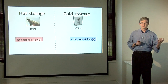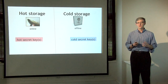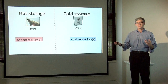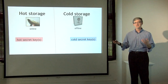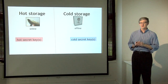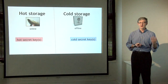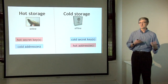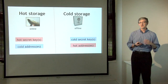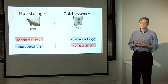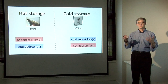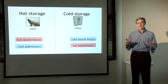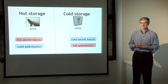You're going to have separate secret keys to control coins on the hot side and the cold side. The whole point of cold storage is that the coins in cold storage are not vulnerable to attack or loss if the hot storage is compromised. Each side needs to know the addresses the other side is using because you want to be able to transfer money back and forth. Each side knows its own secret keys and also knows the addresses at which the other side will accept transfers.